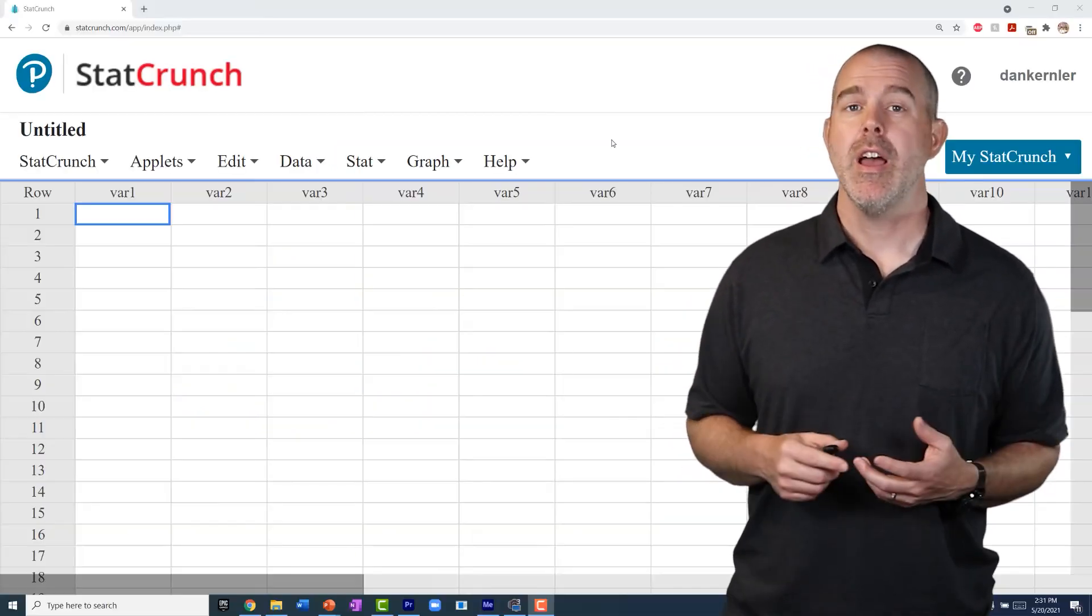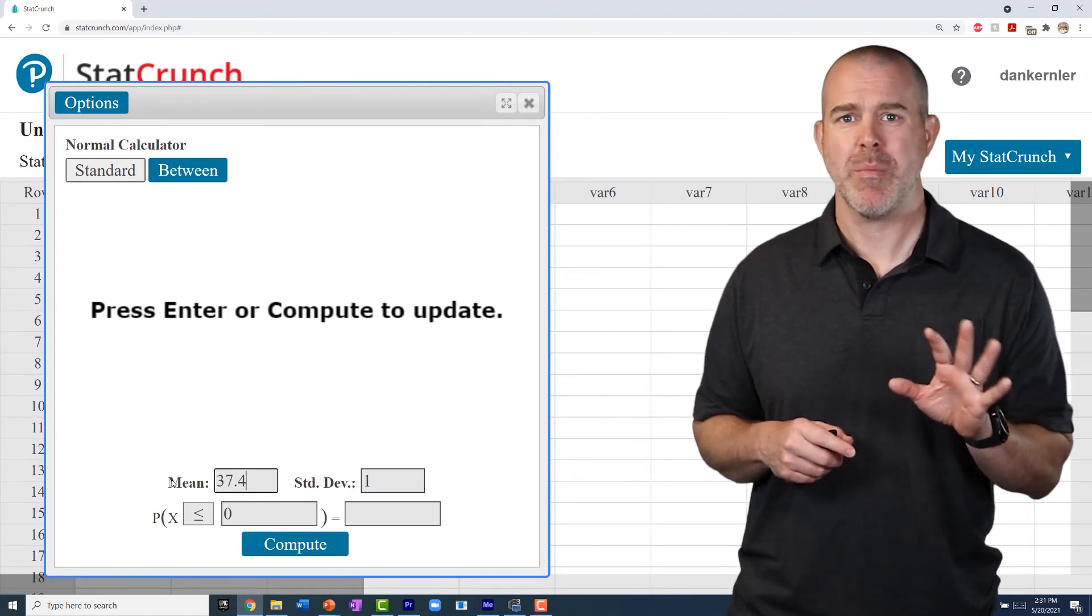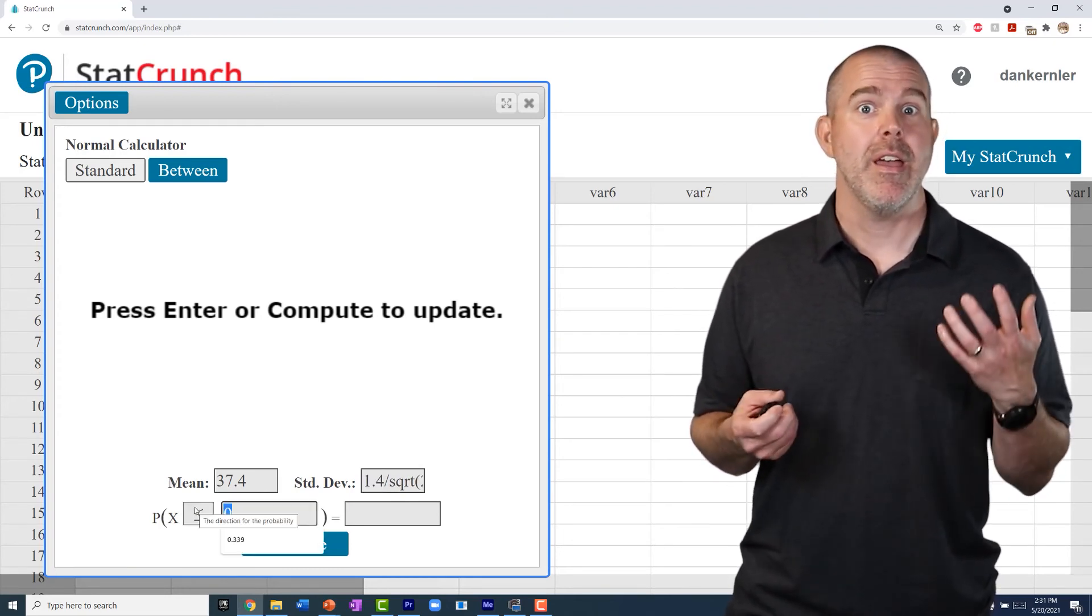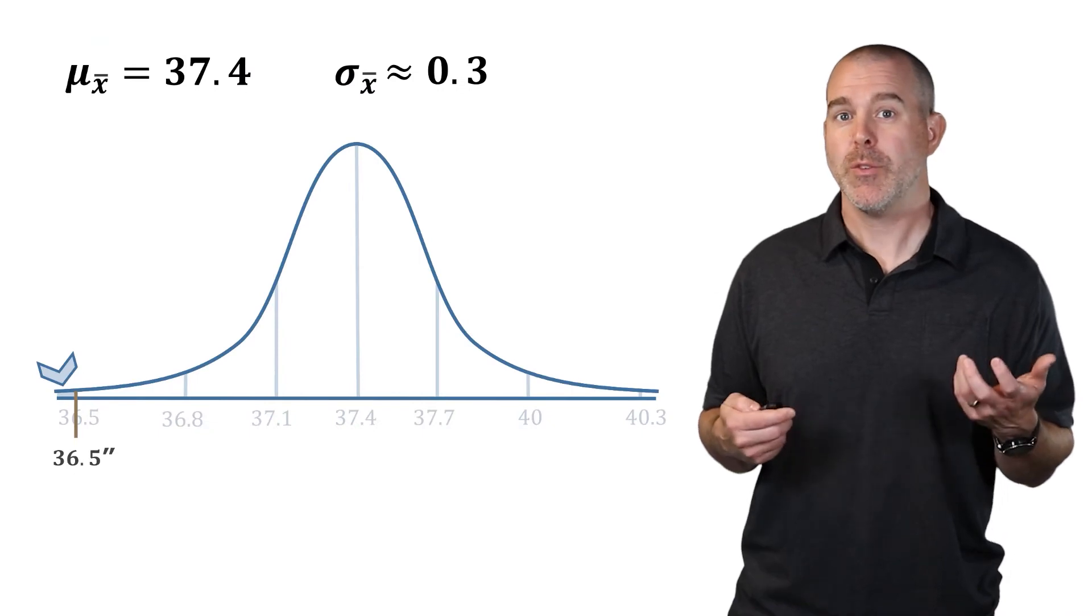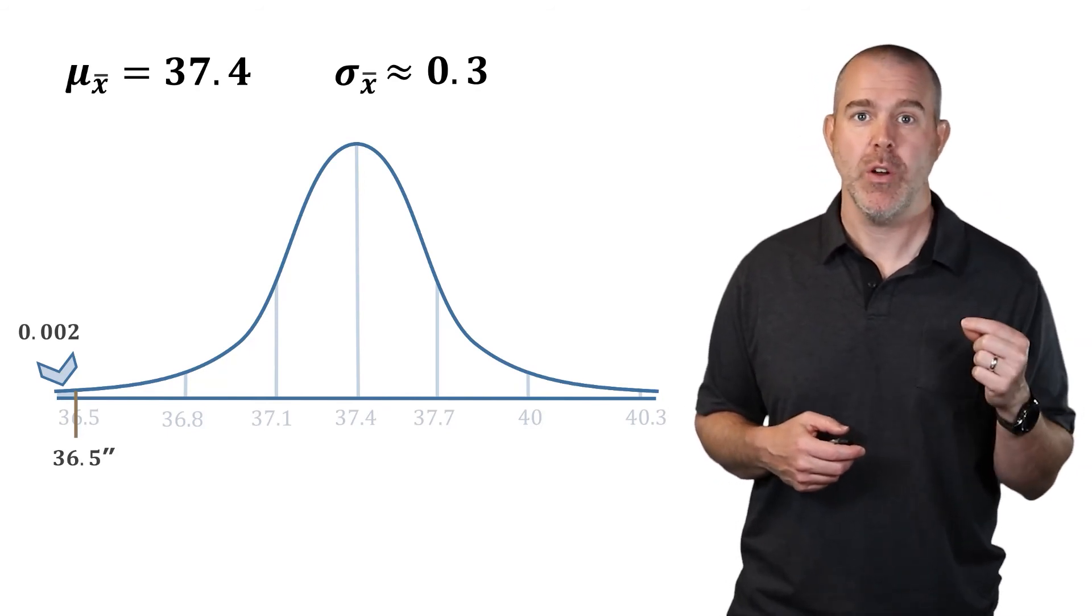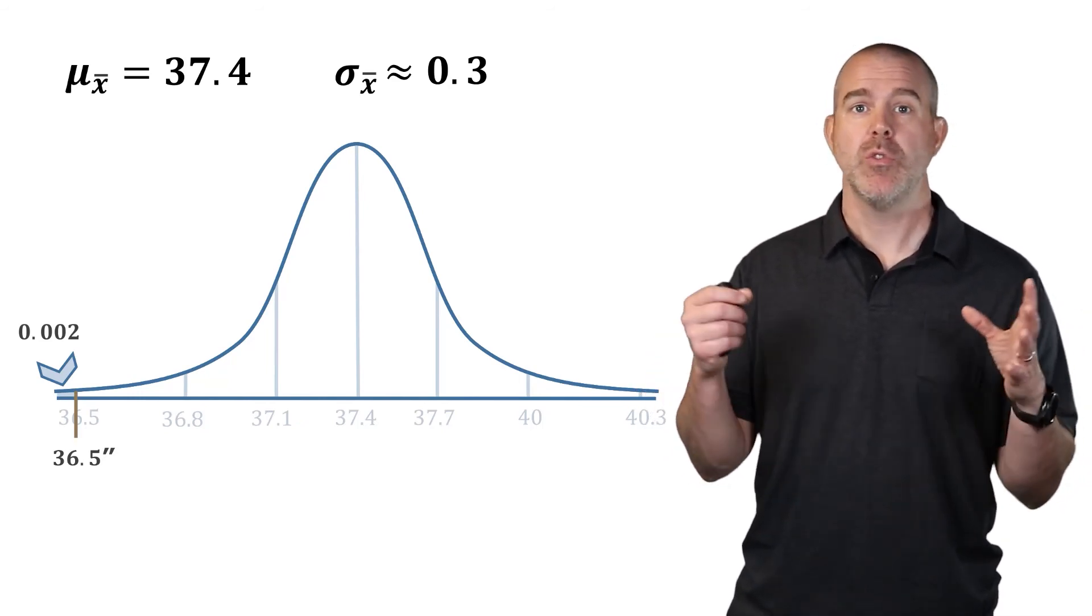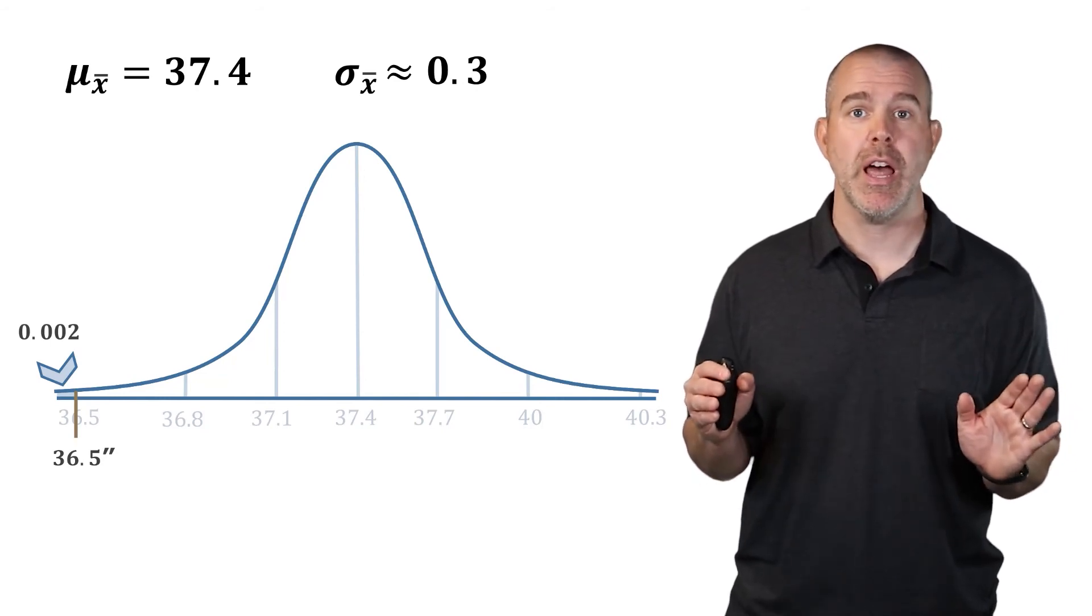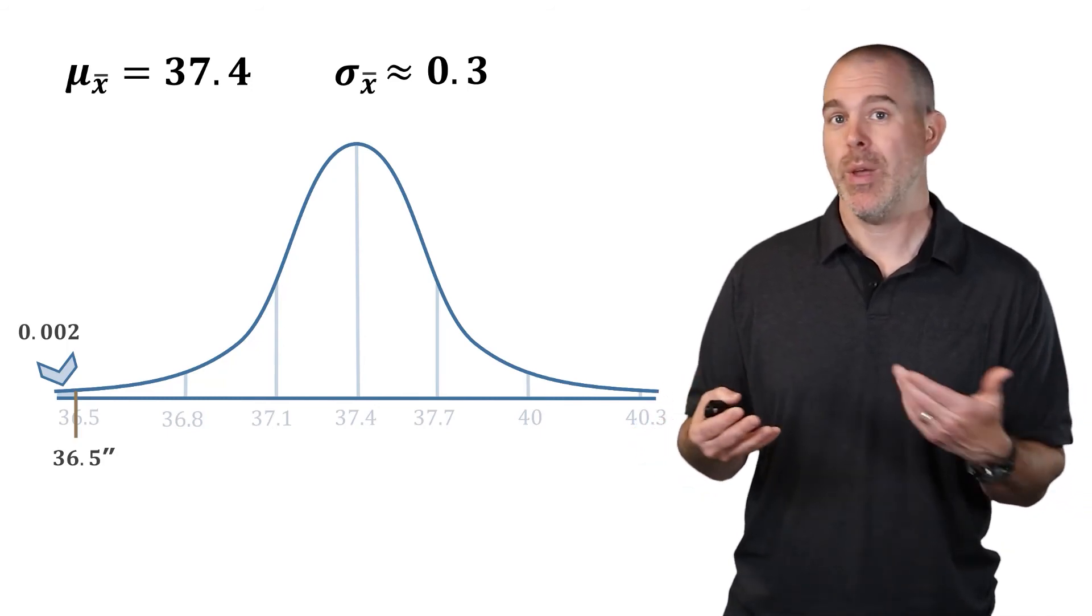We want to find the probability of being to the left of that. We can do this in StatCrunch as well. We can still do the same mean, 37.4, but our standard deviation, I'm actually going to just type in, so I'm not rounding here, 1.4 divided by the square root of 20. And then we still want less than or equal to 36.5. Wow, now we get a much smaller probability. This probability is 0.002. So only two out of a thousand samples of size 20 of three-year-old boys would have heights of 36.5 inches or less. So if we had a random sample of 20 three-year-old boys and their mean height was 36.5 inches, there's something weird going on there because that is super unlikely to happen randomly.